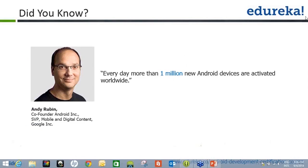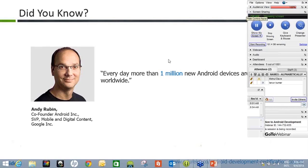Let's first talk about what Android is. The person on the left of your screen is Andy Rubin, the co-founder of Android Inc. Every day more than 1 million new Android devices are activated, which is a huge user base. The larger the user base, the more demand there is for service providers. As Android developers, we cater to those daily users by creating various business and enterprise applications to serve the needs of the industry.